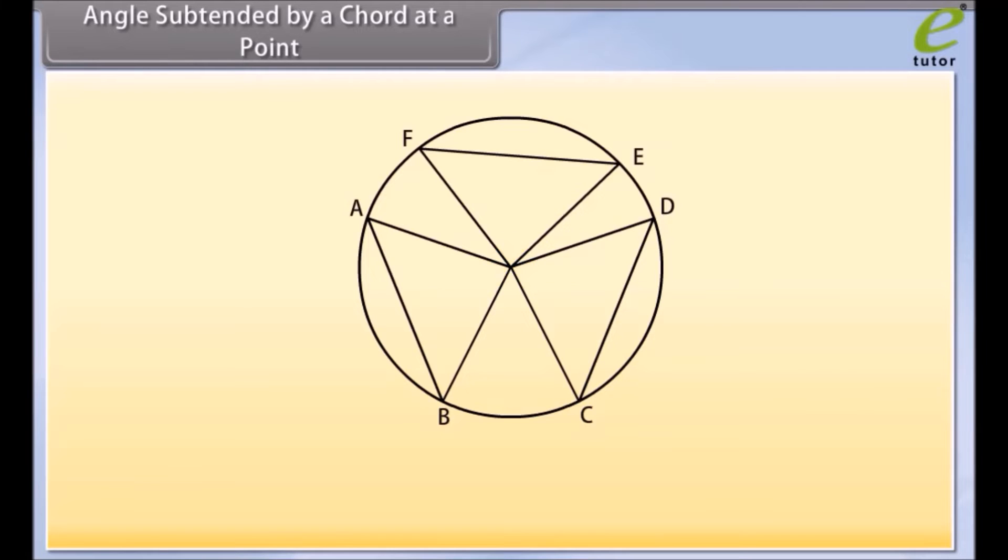This relation gives us the theorem which says that equal chords of a circle subtend equal angles at the center.